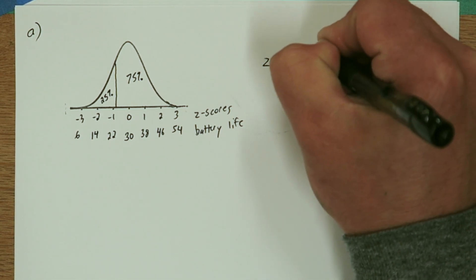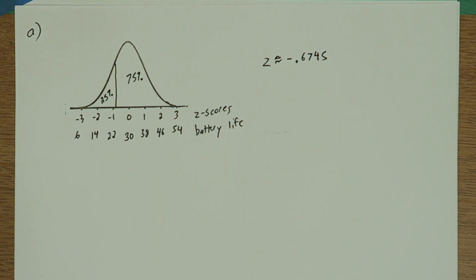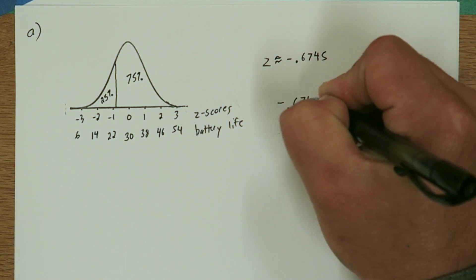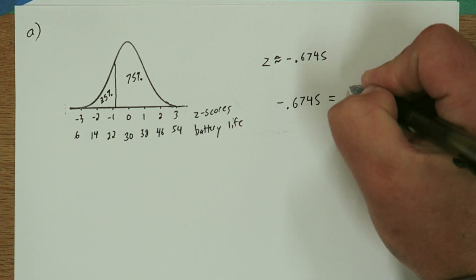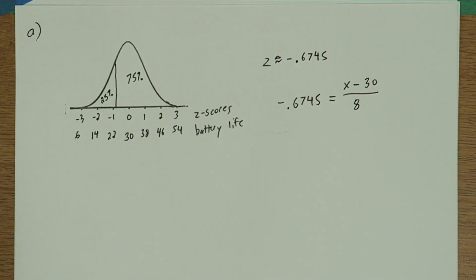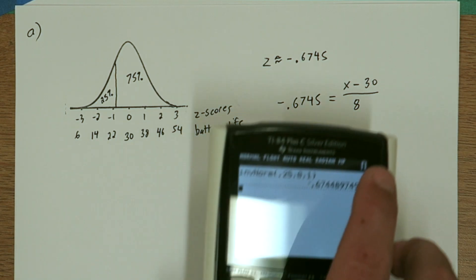Now using the Z score formula and a little bit of algebra you could solve the rest. We know that negative 0.6745 has to equal whatever the battery life that cuts off the lower 25% of data minus the mean divided by 8. But I'm going to show you an easier way on the calculator.